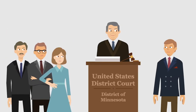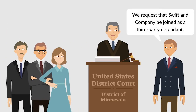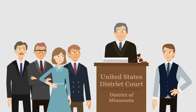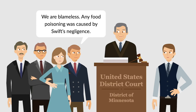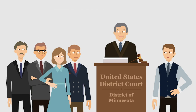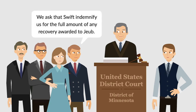At BG Foods' request, the court joined Swift & Company as a third-party defendant. In its third-party complaint, BG Foods alleged that it was blameless, and that any food poisoning was caused by Swift's negligence. BG Foods asked Swift to indemnify it for the full amount of any recovery awarded to Jube against BG Foods.